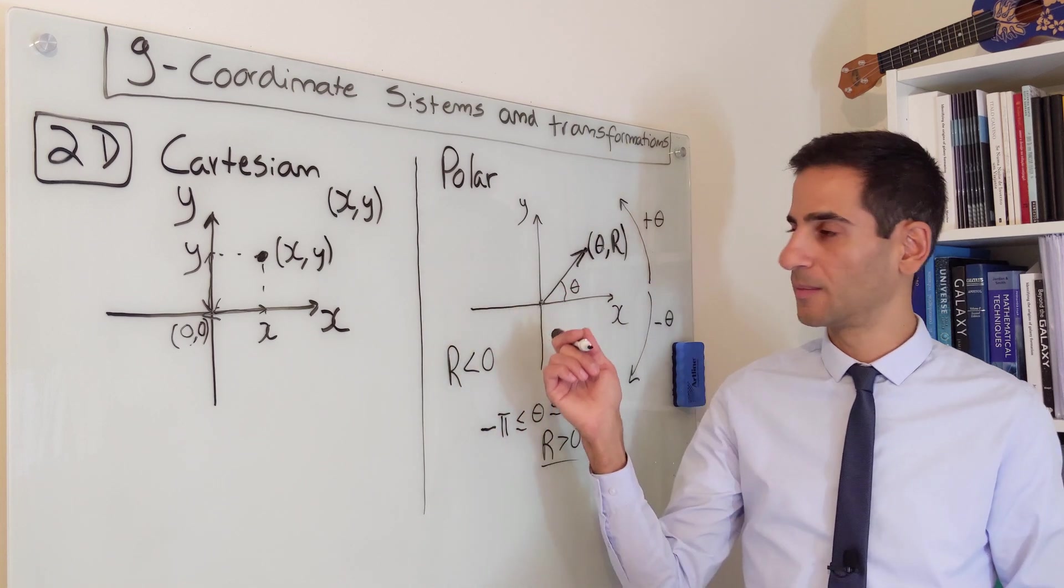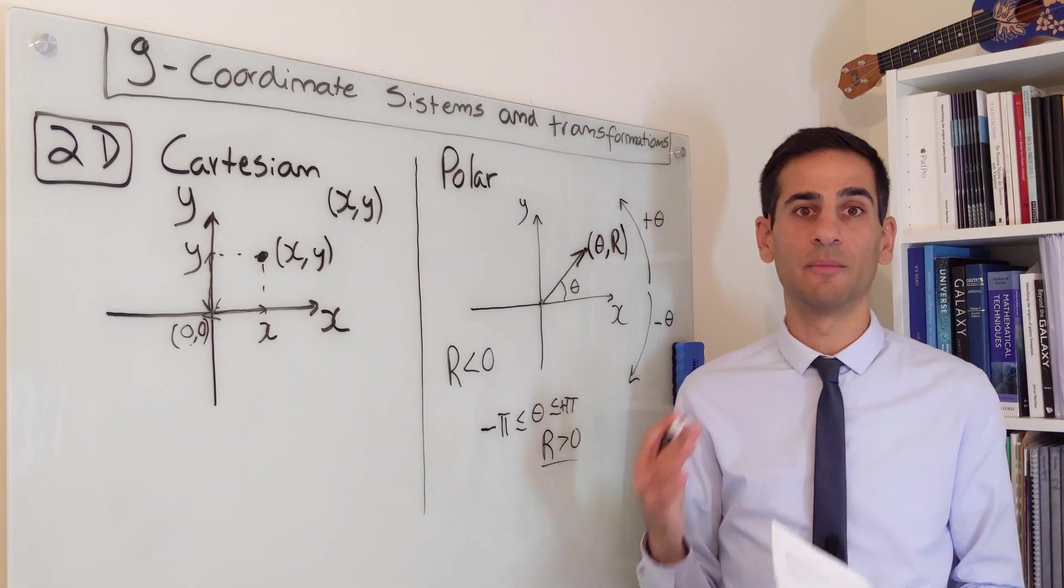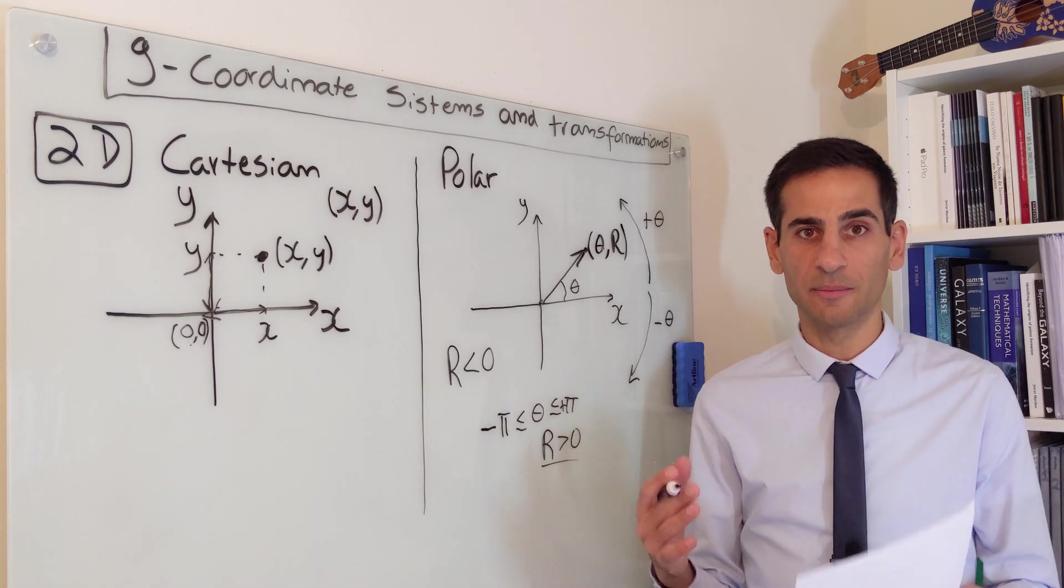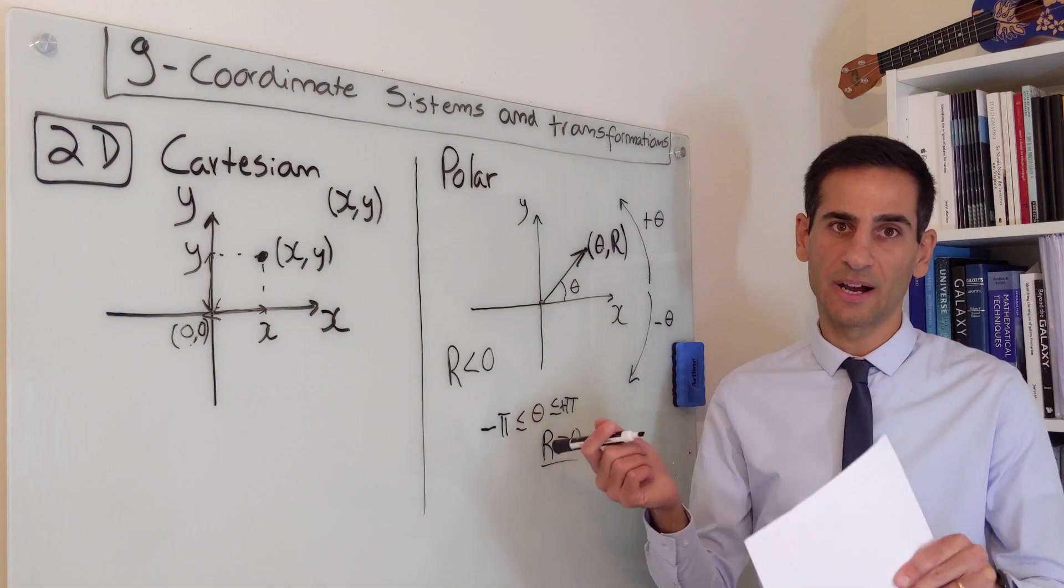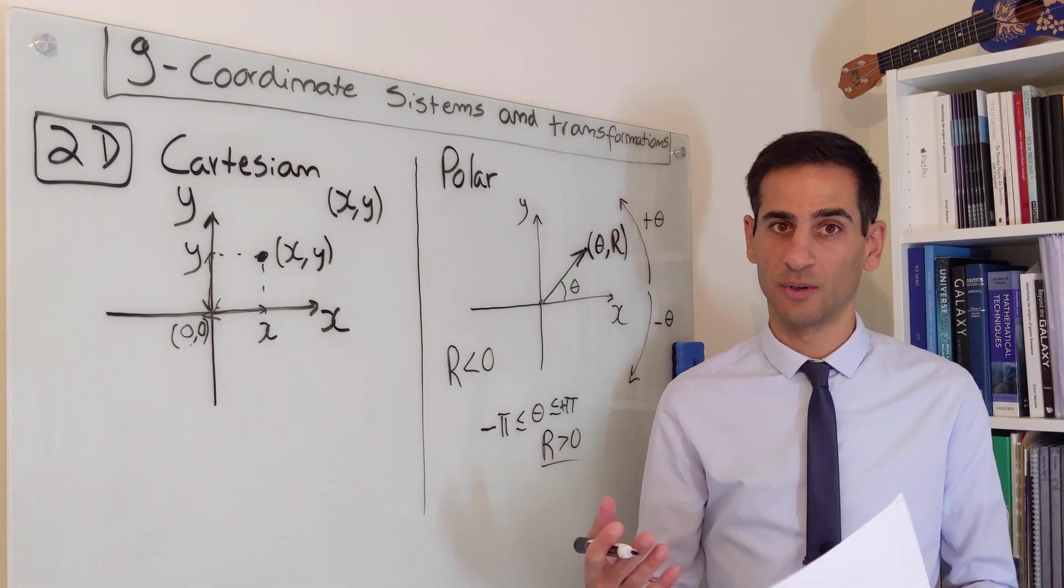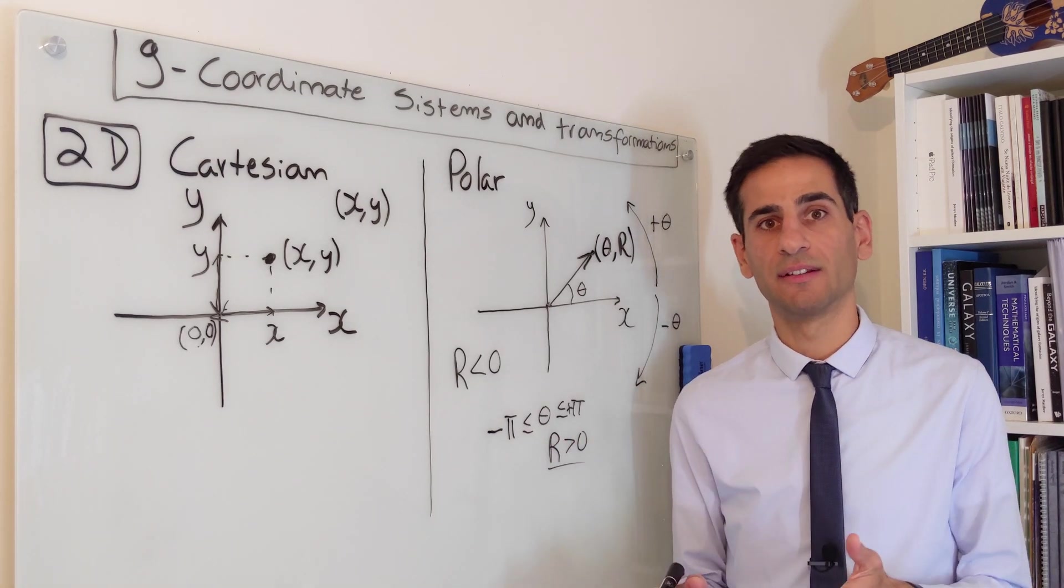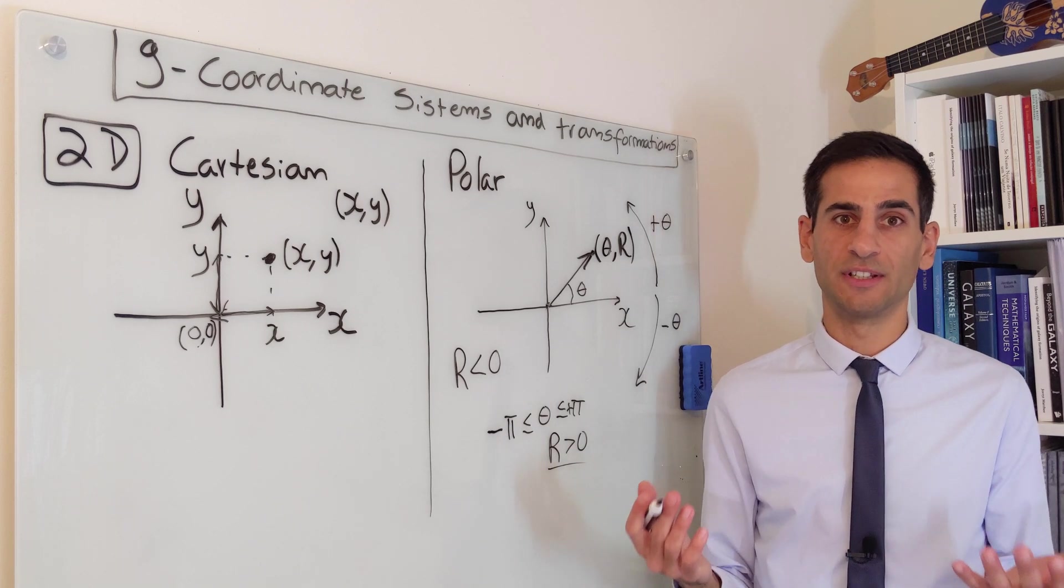And as we'll see in some examples, whenever you convert from polar coordinates to Cartesian, you need to be careful because of that, of the combinations. There are infinite combinations, but r and theta are always linked. So you can't just add π or 2π without thinking about what you're also doing to r, but we're going to get to that specifically when we look at coordinate transformations, which is the next video.